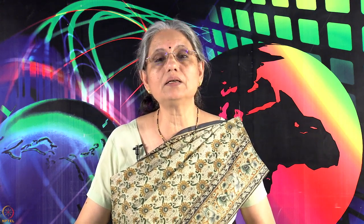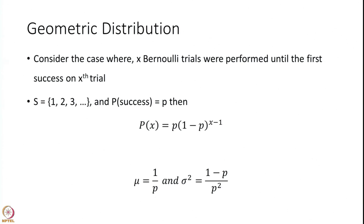The next is the geometric distribution. Here, x Bernoulli trials are performed until the first success happens on the x-th trial. The first success can happen on the first, second, third, or any future trial, so S is an infinite set. With probability of success P, the PMF is P(x) = P × (1−P)^(x−1). The mean value is 1/P and the variance σ² = (1−P)/P².